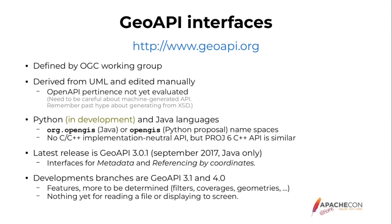We have Python in development — Python abstract classes and Java interfaces. The Python interface currently covers only metadata and referencing by coordinate. We don't have yet a C++ API that is implementation-neutral, but the PROJ C++ API is very close because it is derived from the same abstract classification, ISO 19111. If people were interested in creating an implementation-neutral API in C++, it may be worth looking at PROJ as a starting point.